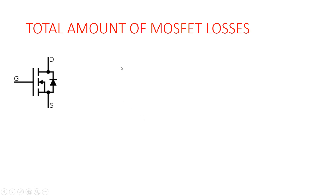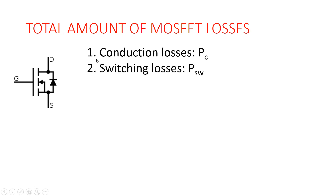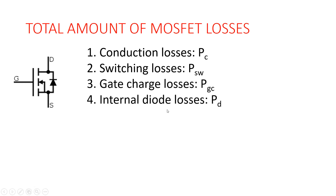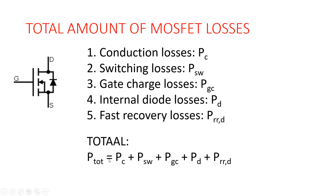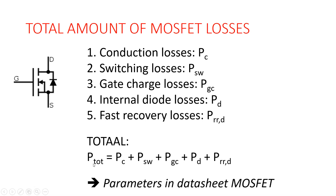Putting it all together, we have five types of MOSFET losses: conduction losses PC, switching losses, gate charge losses, internal diode losses, and fast recovery losses. The conduction losses and switching losses are the most important — the biggest contributions. It is good practice to calculate all five parts so you can see which ones are dominant. When you add all these losses together, you can calculate the total MOSFET losses, determine the junction temperature, and verify it meets the specification in your datasheet. All the parameters discussed here can be found in the datasheet of your MOSFET. Thank you for watching, and I'll see you next time.